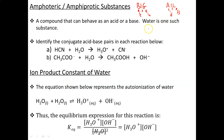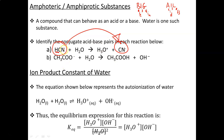If you recall, I gave you an acronym to memorize: BIG-ALE, where base is gain and acid is loss — gain and loss of a proton, an H+ ion. So whichever compound gains the H+ ion is the base and whichever loses it is the acid. If you look at HCN here, it seems to have lost the H, so this is considered to be the acid — acid is loss.